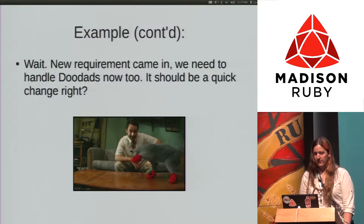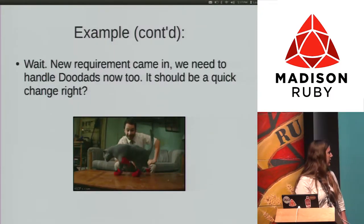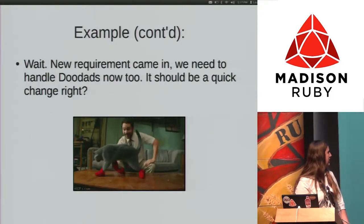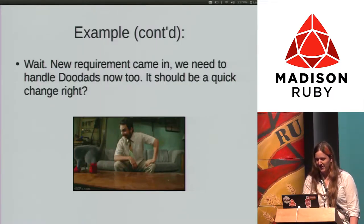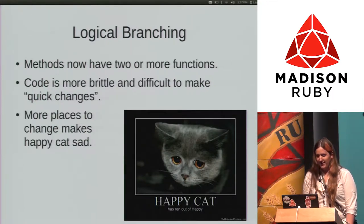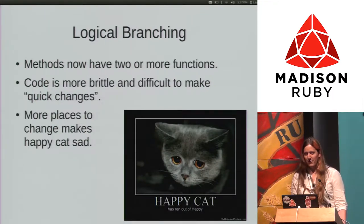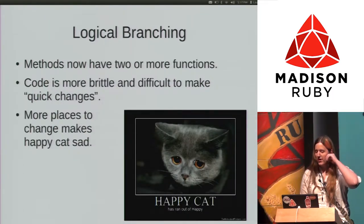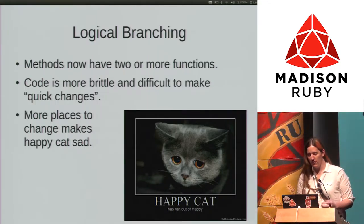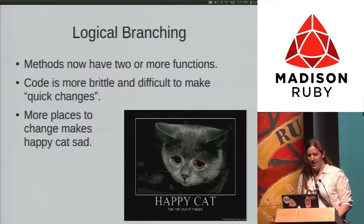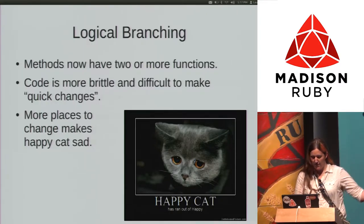Oh god, new requirement. It should be quick, right? So this is logical branching — methods now have two or more functions, code is more brittle and difficult to make quick changes. And really, this just makes Happy Cat sad. Happy Cat has run out of happy.